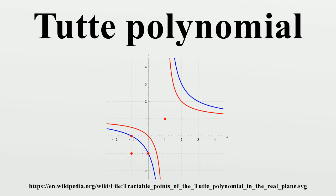Along a certain hyperbola, the Tutte polynomial of a planar graph specializes to the Jones polynomial of an associated alternating knot. At individual points: T_G(1,1) counts the number of forests (acyclic edge subsets); T_G(1,2) counts the number of spanning forests; if the graph is connected, T_G(1,1) counts the number of spanning trees; T_G(2,1) counts the number of spanning subgraphs; T_G(2,0) counts the number of acyclic orientations of G; T_G(0,2) counts the number of strongly connected orientations of G. If G is a four-regular graph, then T_G(0,2) counts the number of Eulerian orientations of G.